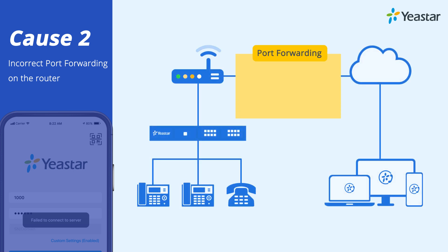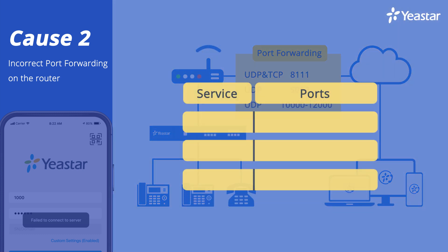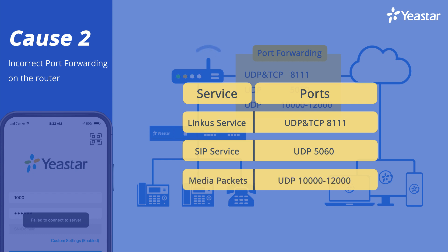To make sure that port forwarding has been done properly, we need to check three sets of ports. First, port 8111 both UDP and TCP, which is for Linkus service. Second, port 5060 UDP for SIP service. And third, ports 10,000 to 12,000 UDP for RTP media packets. You need to prepare three sets of available ports on your router with access to the public internet and assign each to the corresponding service, as shown in the video.